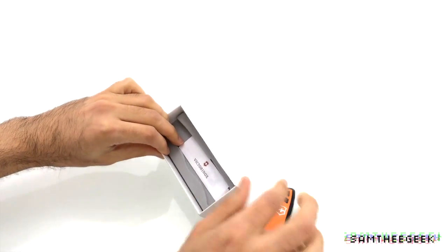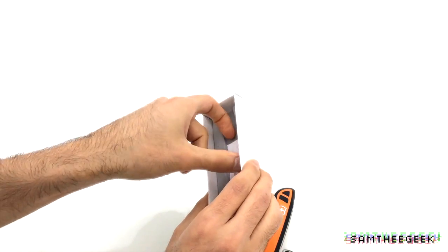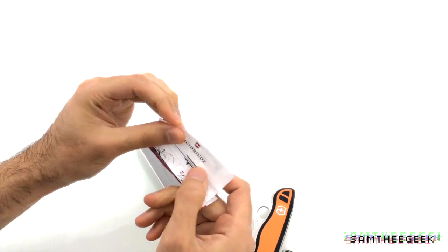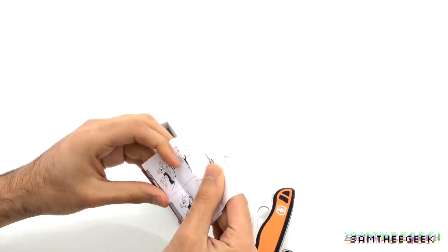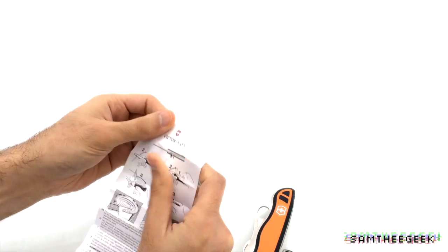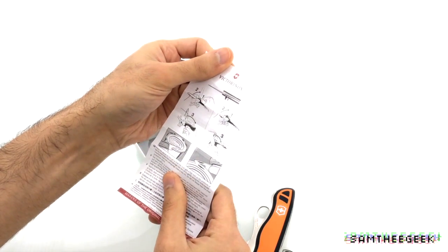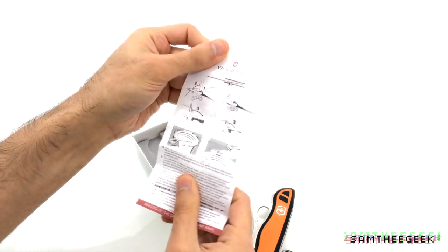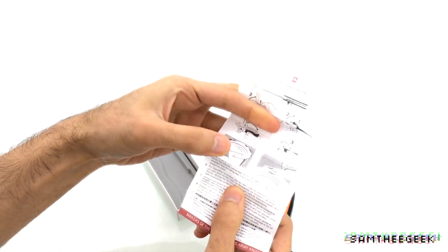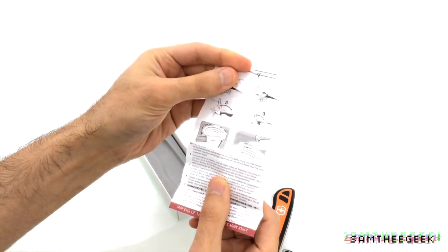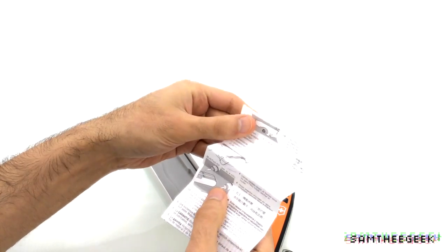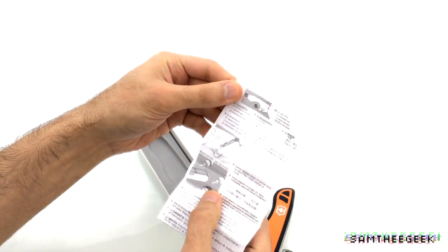Let's see what else comes. All right, it's showing us how to open the knife - screwdriver, cap opener, can opener as well, how to use that, nice. How to lube it, you know, use lubrication on the tools.